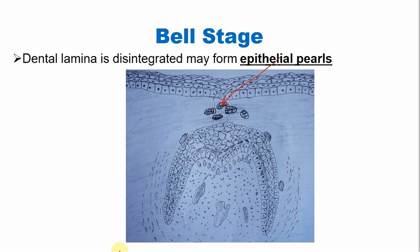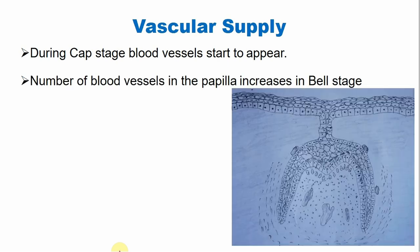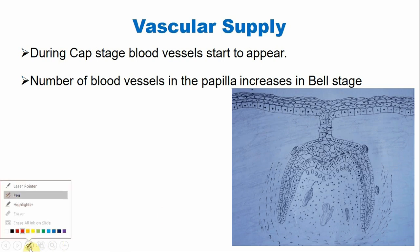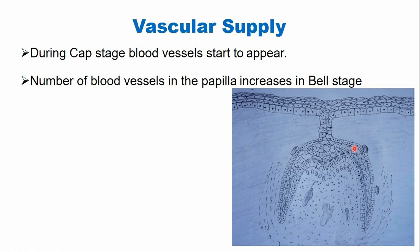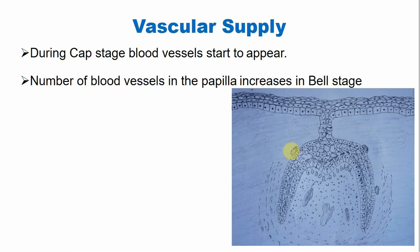Let's discuss blood and nerve supply. During the cap stage, blood vessels start to appear, but the number of blood vessels increases during the bell stage because there is formation of dental hard tissue. Blood vessels are present near the outer enamel epithelium and also within the dental follicular region, supplying the cells of the enamel organ.